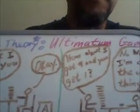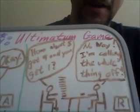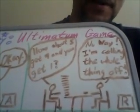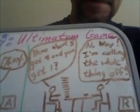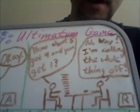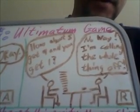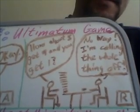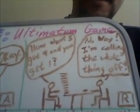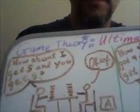Now what happens in another scenario where the guy on the left says, 'How about I get nine and you get one dollar out of the $10 bounty this round?' The second guy says, 'No way,' and calls the whole thing off — leading to the 'R' at the bottom right. Nobody gets any money that round. So there's an incentive to make a fairer dispersal of the bounty: five to five is almost always accepted, while nine to one is very rarely accepted.